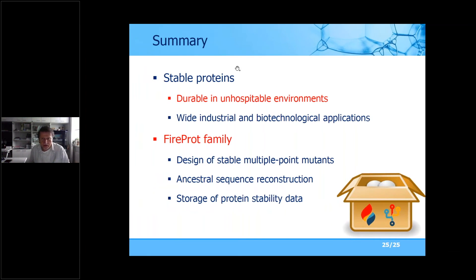Thank you for a very interesting talk. The first question: does it involve coevolution — meaning correlation of residues in multiple sequence alignments? Yes, in FireProt we are actually checking for co-evolution and we try not to touch those mutations, as we expect that mutating co-evolving positions might cause issues. However, in the next version of FireProt we are planning to also check those mutations and try to design correlated mutations.